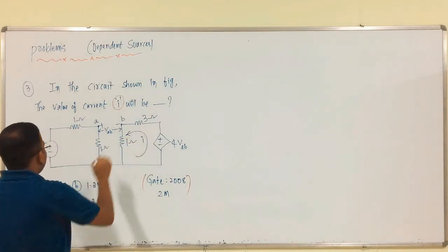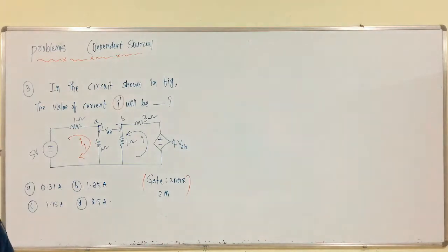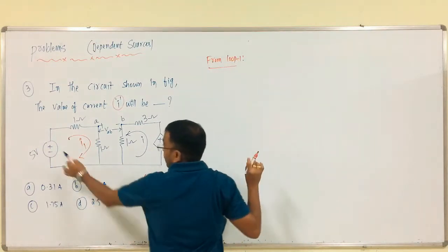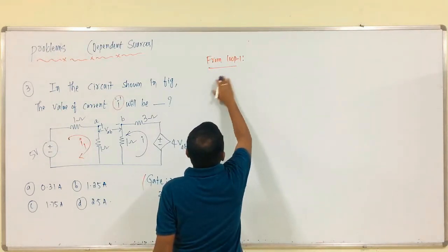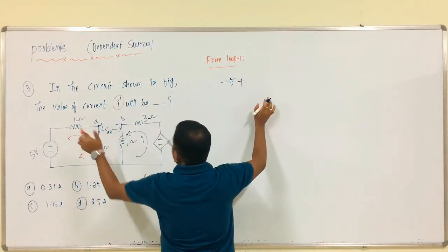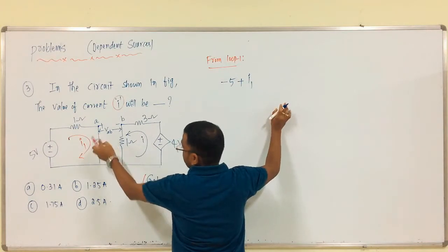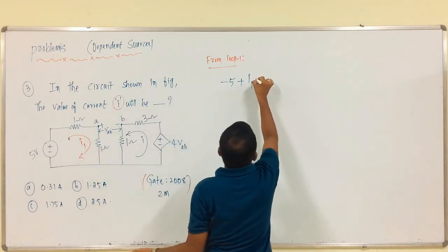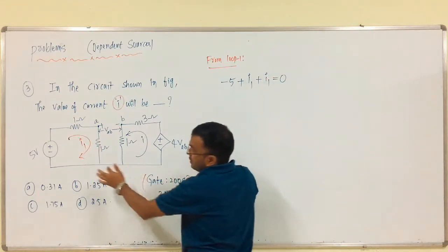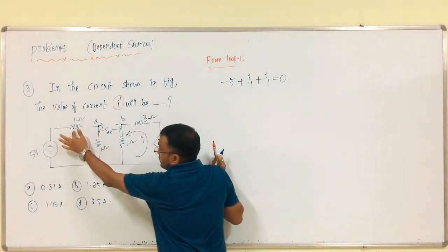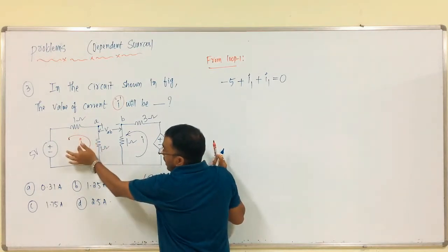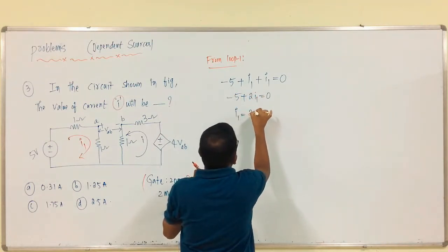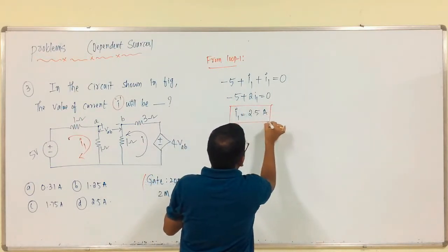From loop 1, starting from this: minus 5 plus 1 into I1. Coming to this branch — there is no connection between this point and these points, so this current I1 is exclusively for this branch only. Therefore plus I1, which equals 0. So: minus 5 plus 2·I1 equals 0, giving I1 equals 2.5 amps.